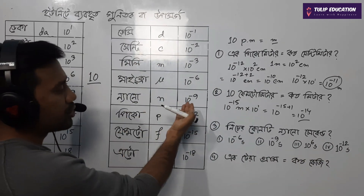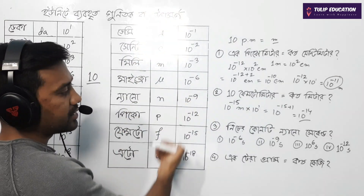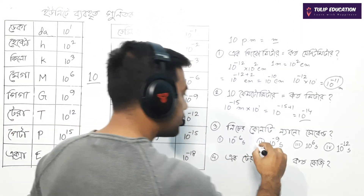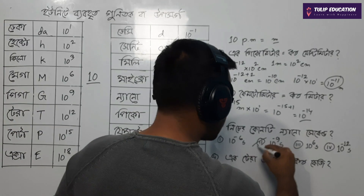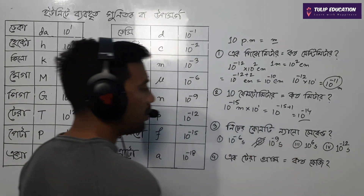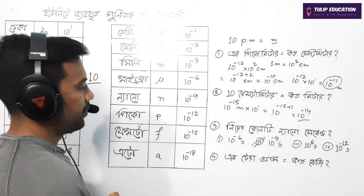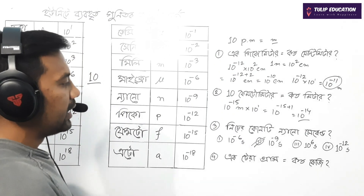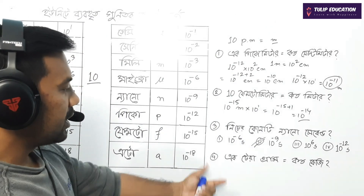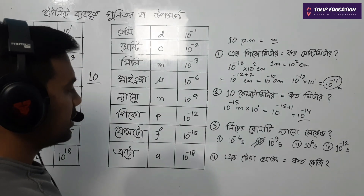10 to the power of minus 9 second. So 10 to the power of minus 9. We have done the number of times.